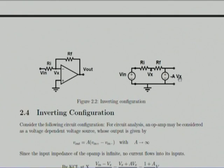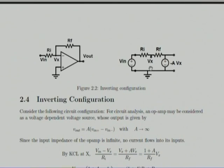Its output is A times Vx, and it is in the inverting configuration. If I have Vx at the input, then at the output I have minus A times Vx, and between input and output I have Rf, and here I have Ri. Notice that I have not taken an ideal op amp — it is actually better to begin with a somewhat more complicated thing.